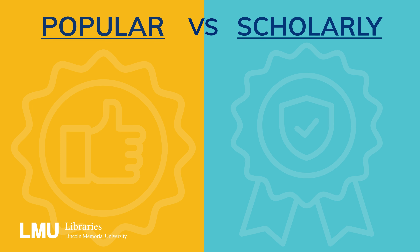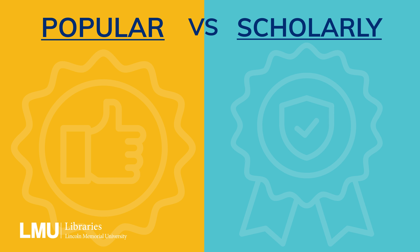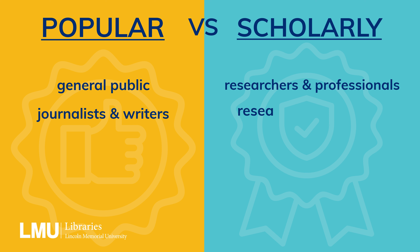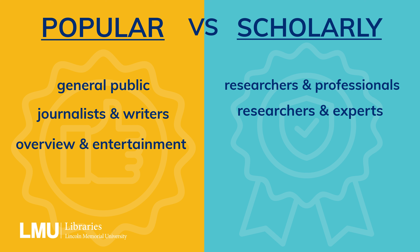Here's a quick comparison. Popular articles target the general public; scholarly articles target researchers and professionals. Popular articles are written by journalists or staff writers; scholarly articles are written by researchers and experts in the field. Popular articles provide a broad overview or entertainment, while scholarly articles offer detailed, evidence-based analysis.